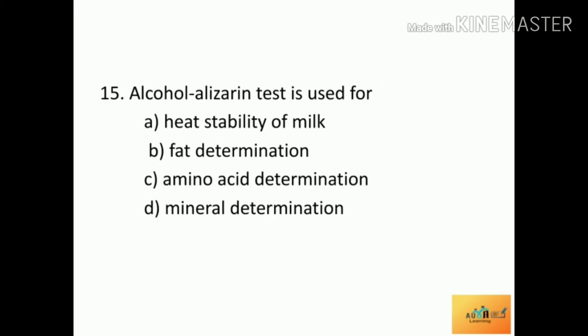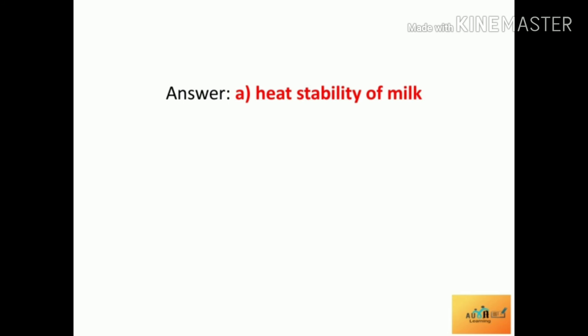Next question: Alcohol alizarin test is used for — Option A: heat stability of milk, Option B: fat determination, Option C: amino acid determination, Option D: mineral determination. The correct answer is heat stability of milk. The alcohol alizarin test is used for checking the heat stability of milk.